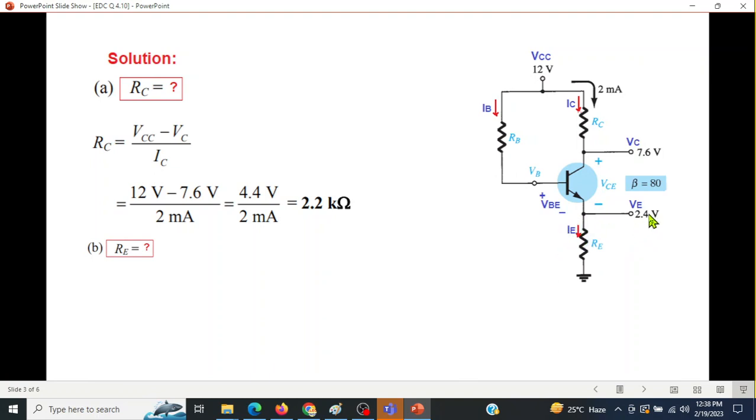Next question is to find RE. This is RE. We know VE. If we can find IE, then we can calculate RE using this formula. So RE is VE over IE. VE is known but IE is not known, but we know that IE is equal to IC plus IB. Since IB is very small, we can approximate IE to be equal to IC. IE equals IC, and IC is 2 milliampere, so we'll use this formula. 2.4 is VE, then 2 milliampere, so RE is 1.2 kilo ohm.